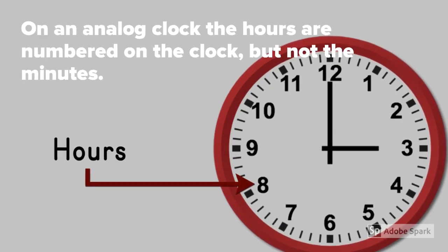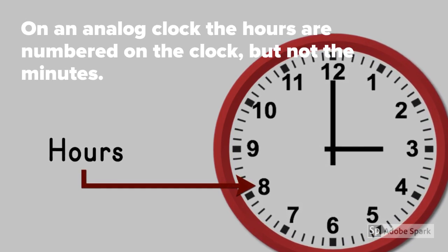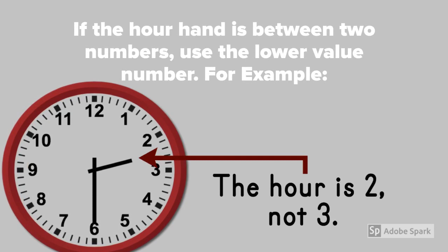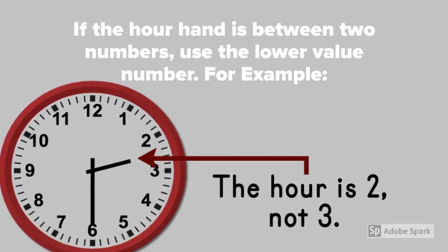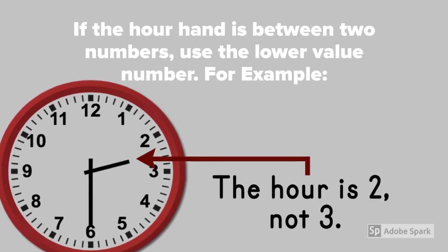On an analog clock, the hours are numbered on the clock, but not the minutes. Remember that if the hour hand is between two numbers, use the lower value number. For example, in this clock the hour is two, not three.